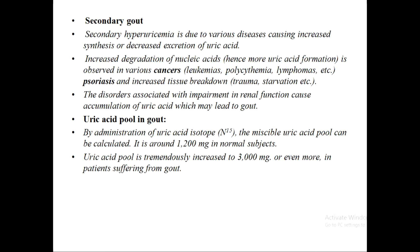The uric acid pool in gout can be measured using the isotope N15. The normal measurable uric acid pool is around 1200 mg, but in patients suffering from gout, this pool tremendously increases to around 3000 mg.